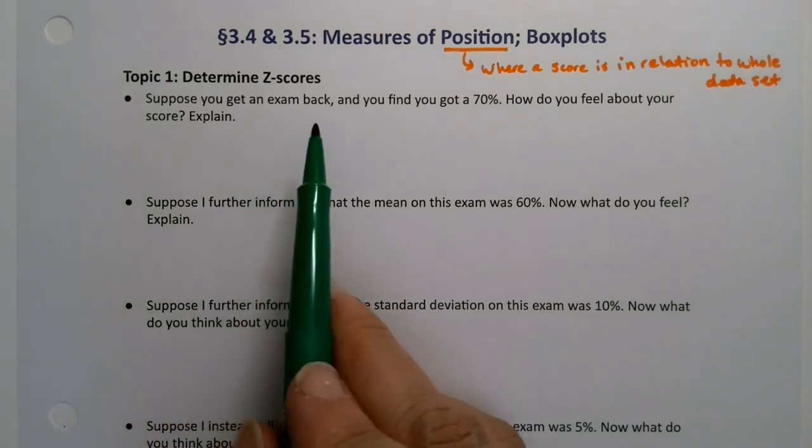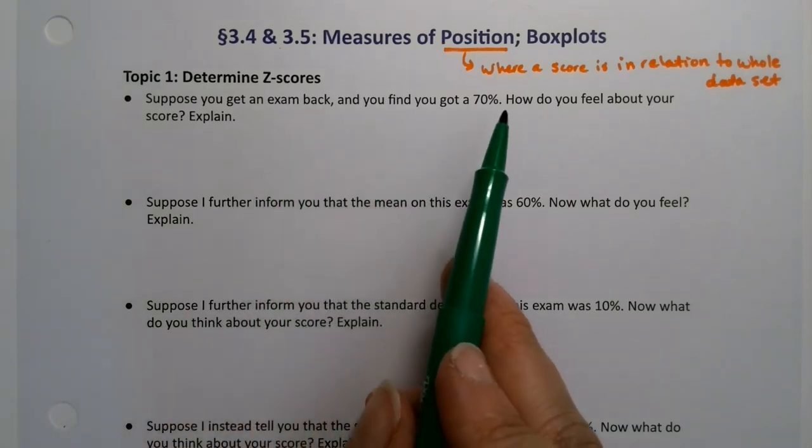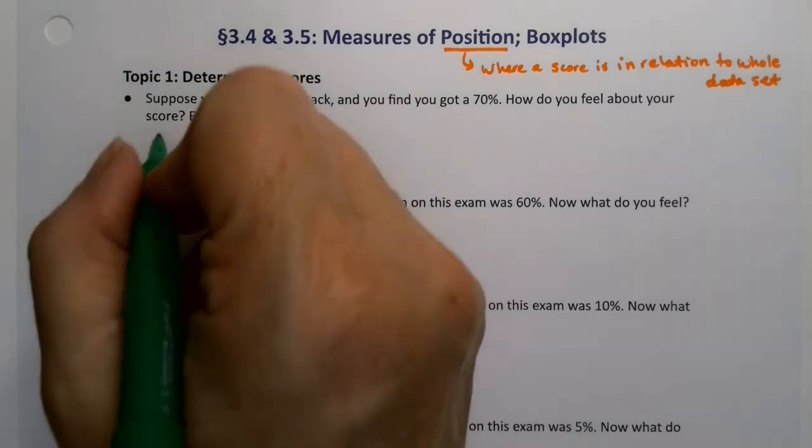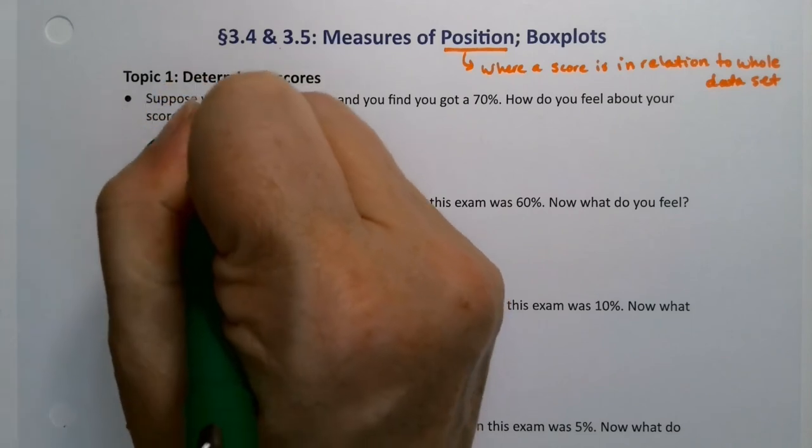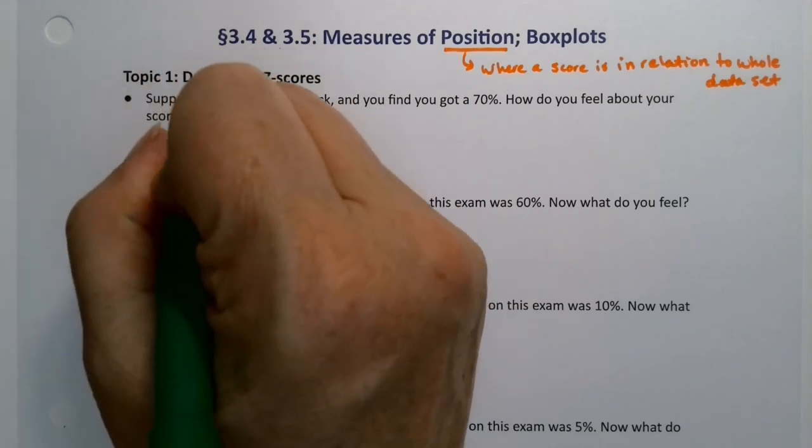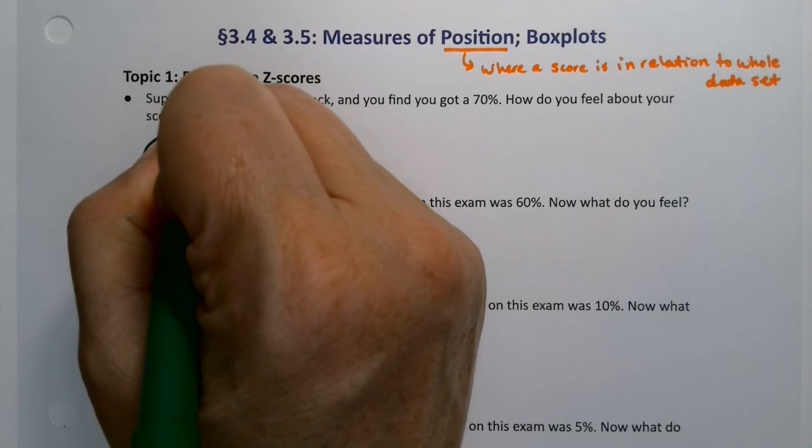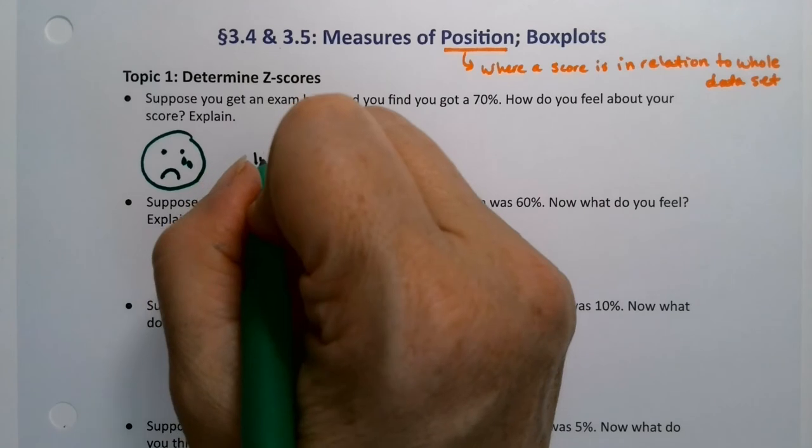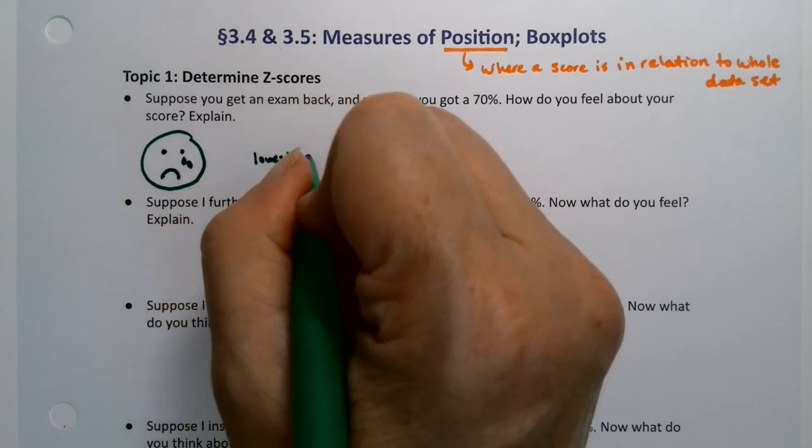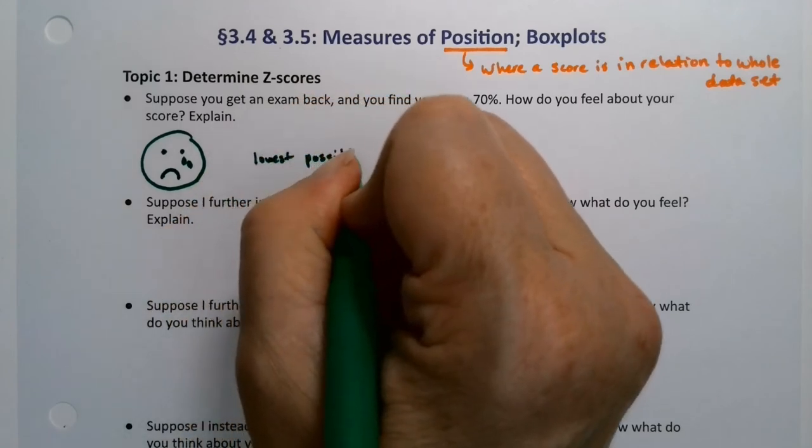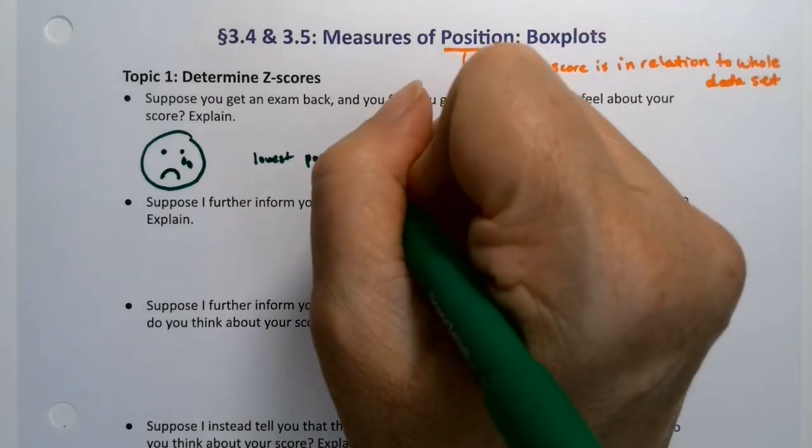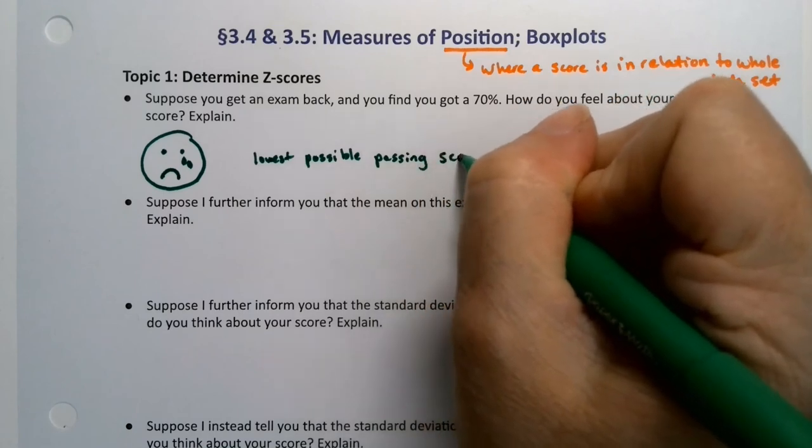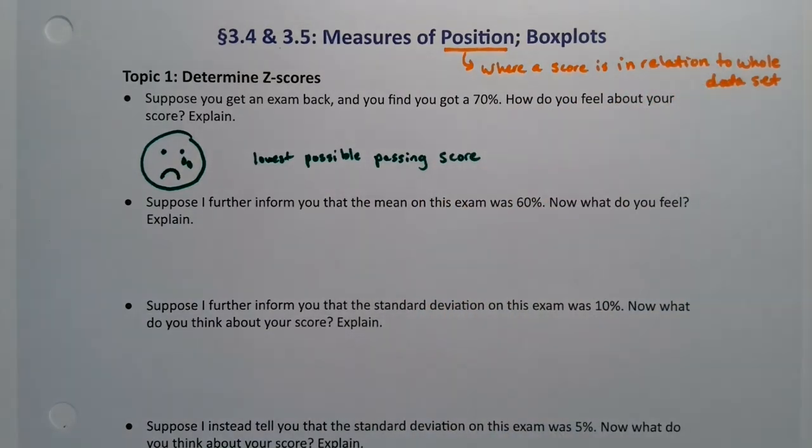So suppose you get an exam back and you find that you got a 70%. How do you feel about your score? Well it can vary from student to student, but usually in a class most people are not happy with that score. They have little tears, big frowny face, right? Now why? Because it's the lowest possible passing score. Now I will get some people that are like I passed woohoo and I understand that, but nevertheless it's the lowest possible passing score so that's a little precarious.